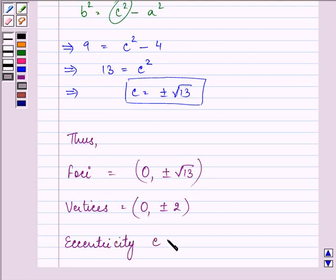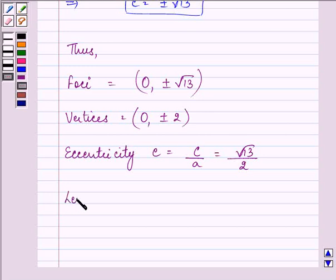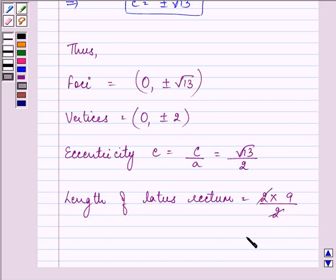Eccentricity, that we refer as e, is c/a, that is √13/2. And the length of latus rectum is equal to 2 into b², that is 9, divided by 2, which gives us the value after simplification as 9.